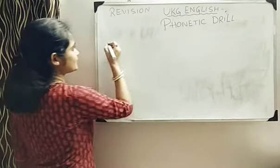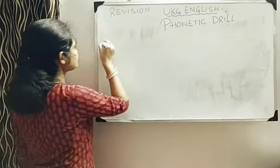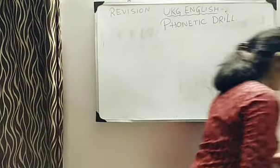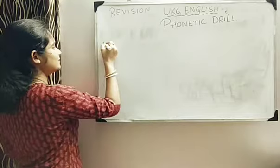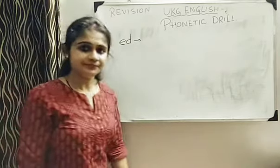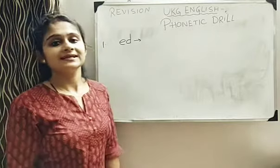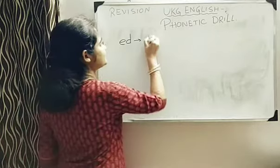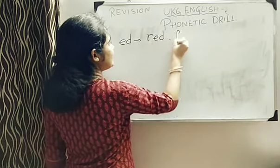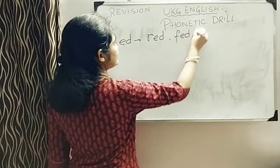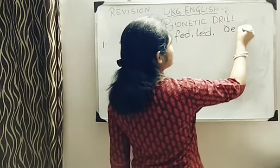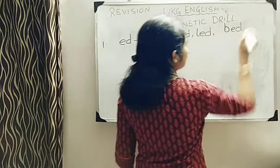So let's start. First one, what I will do is, wait a minute, number 1. So we have started with ED. That means ending letter is ED. And what can be the words like? R-E-D, red. F-E-D, fed. L-E-D, led. The easiest one, B-E-D, bed.